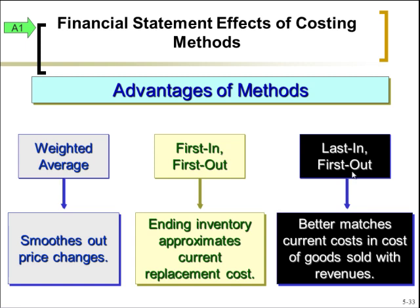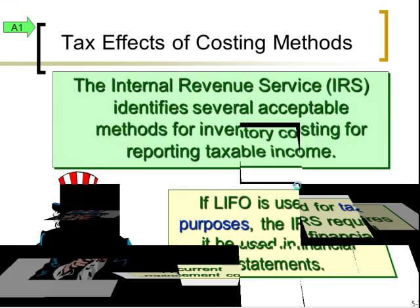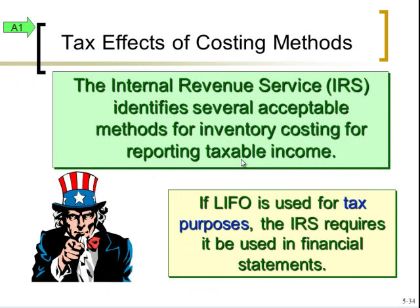Under LIFO, if costs are increasing over time, your profit is going to be less than it would be under FIFO. From a company's and investor's perspective, you want higher profits — so why would you use LIFO? The answer is for tax purposes. Low profit means low taxable income and therefore lower taxes. The IRS is aware of this, so there's the LIFO conformity rule: if you use LIFO for tax purposes, you also have to use it for financial statement purposes. If you want the tax savings, your investors will also see that lower income.